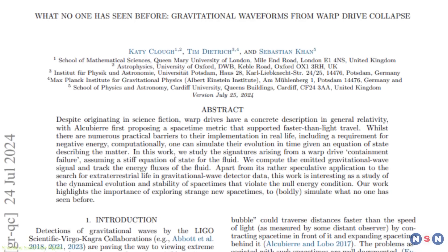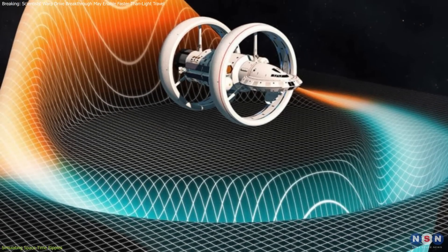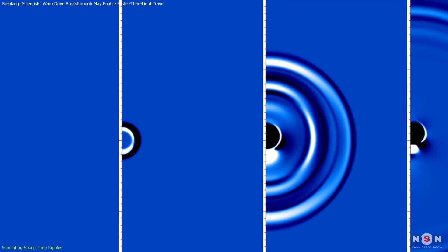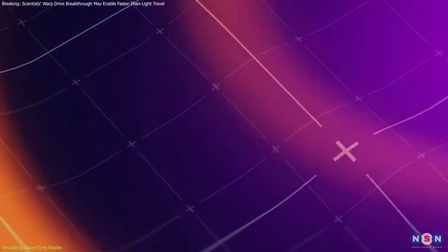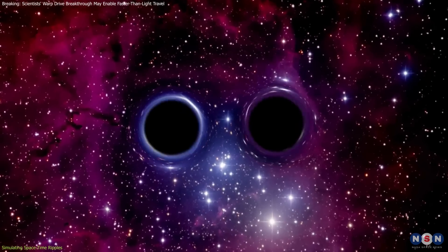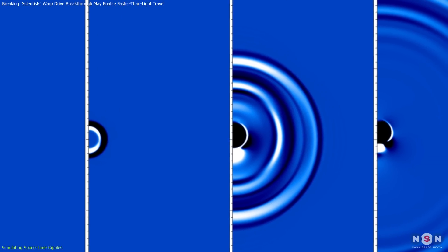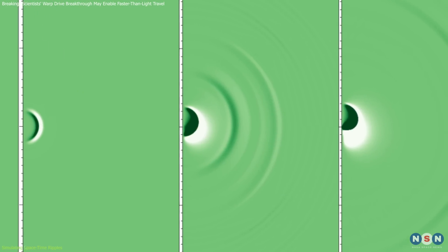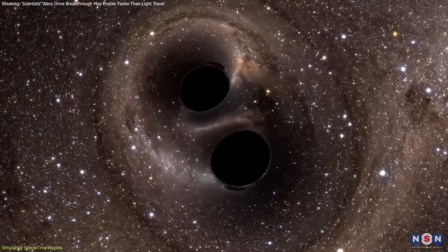The recent study by researchers at Queen Mary University of London represents a significant advancement in our theoretical grasp of warp drive mechanics, focusing on what happens when such a system fails. Utilizing advanced numerical simulations, the team modeled the gravitational waves that a collapsing warp bubble would emit. These waves are ripples in the fabric of spacetime, similar in nature to those detected from events like black hole mergers, yet unique in their signature. The simulated collapse reveals that the failure of a warp drive would not be silent — instead, it would generate a distinct burst of gravitational waves, differing markedly from the chirps associated with merging astrophysical objects.